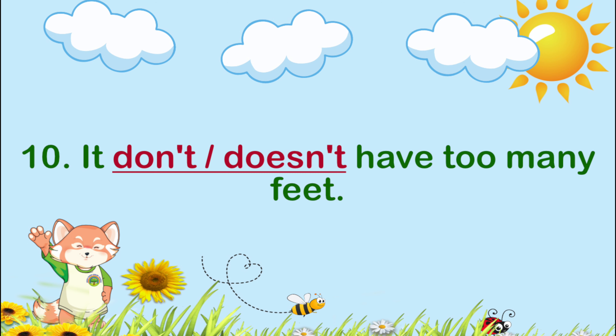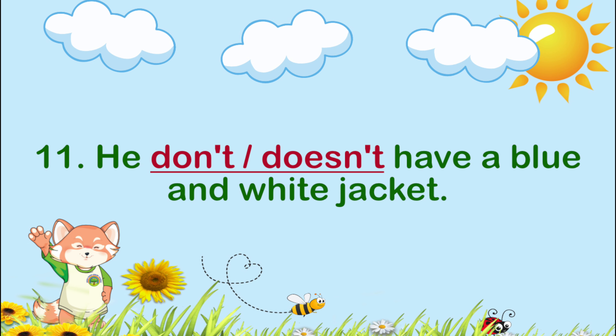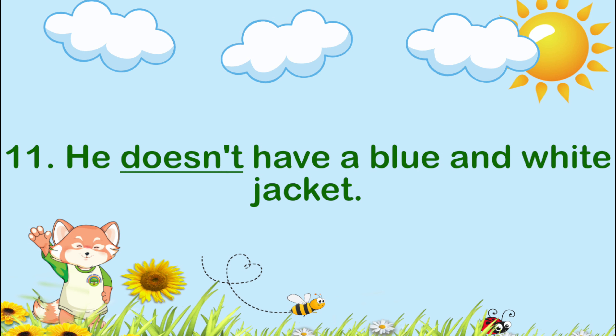Number ten: It ___ too many feet. The answer is doesn't have. It doesn't have too many feet. Number eleven: He ___ a blue and white jacket. The answer is doesn't have. He doesn't have a blue and white jacket.